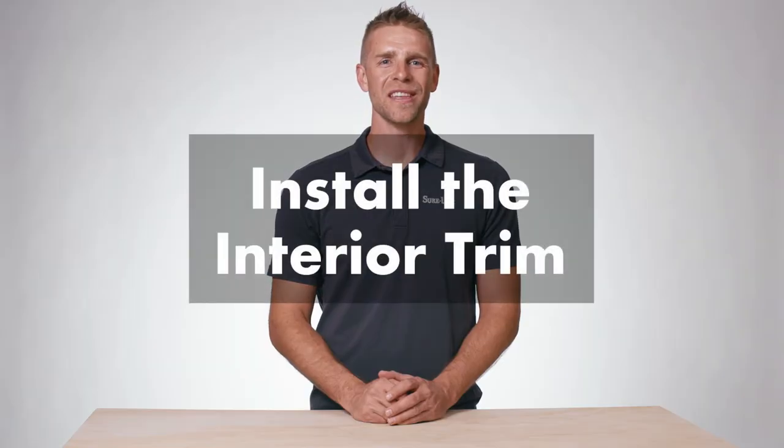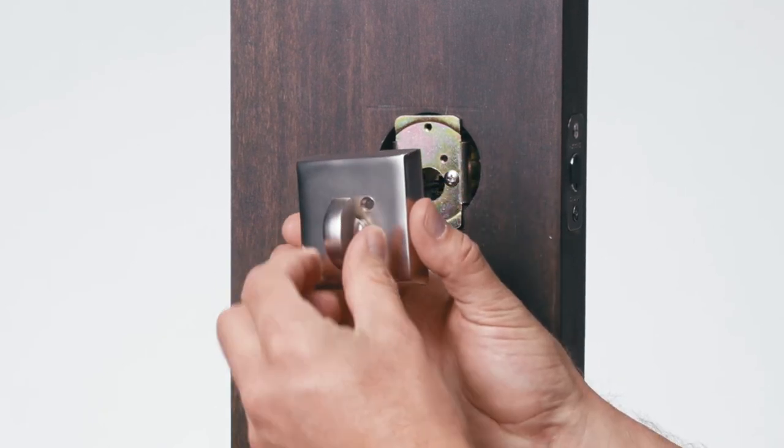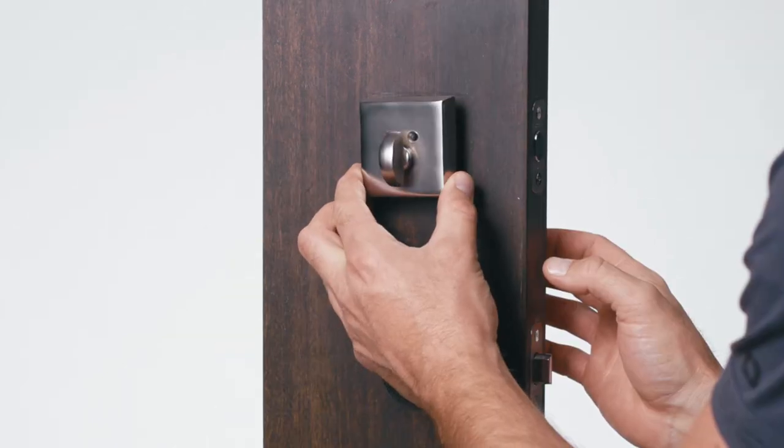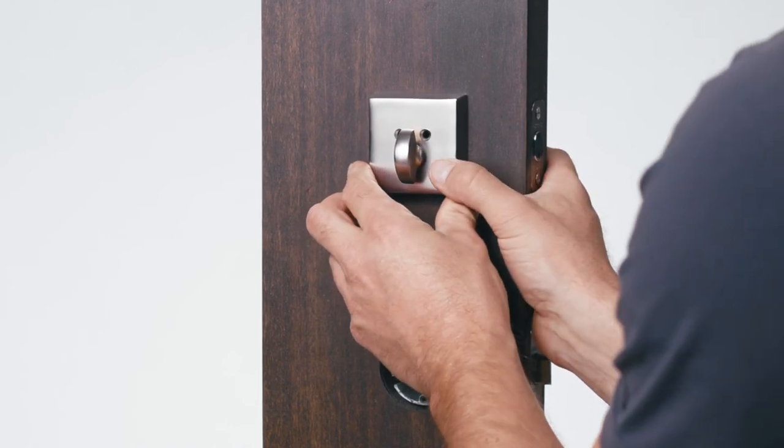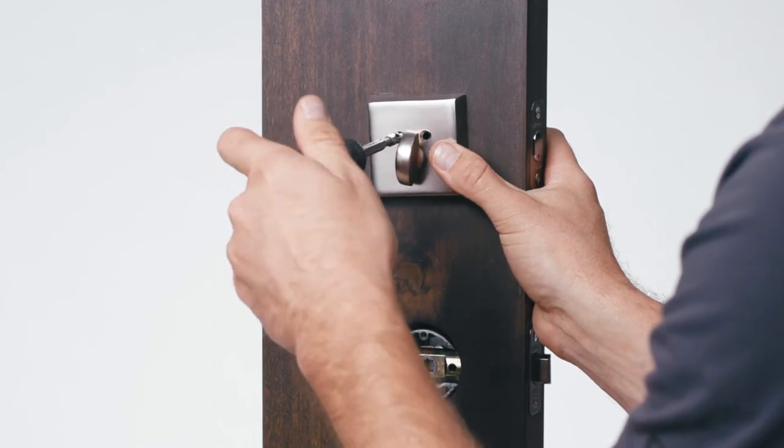Now we will install the interior trim. With the bolt of the deadbolt inside the door, orient the thumb turn vertically. Place the thumb turn over the mounting bracket so that it engages with the deadbolt tailpiece. Install the machine screws and hand tighten.